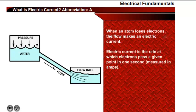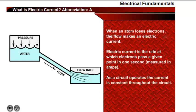For electricity, however, electric current is described as the number of electrons passing a given point in a circuit in one second. Electric current is measured in amps. As a circuit operates, the flow of current is constant throughout the circuit.